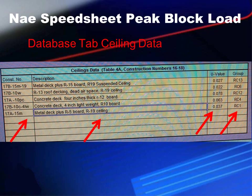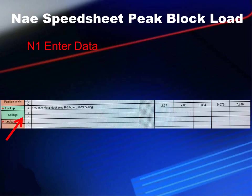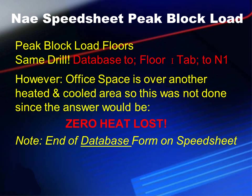Following the order of the form, we use the database tab for ceiling data — again entering a construction number, description, U-value, and group number. Then click to the ceiling tab, select the type from the scroll-down, put in the square footage and color, and we're back on the N1 form. Since my example is from Chapter 12 of Manual N and the block load is over a conditioned space, there's no floor data to enter — no heat loss through the floor. If you did have a floor to fill in, you'd go database, then the Floor 1 tab, then N1 form — same process, same end of database work.